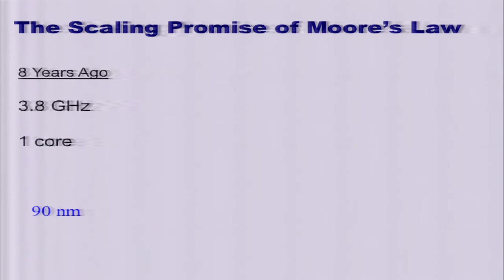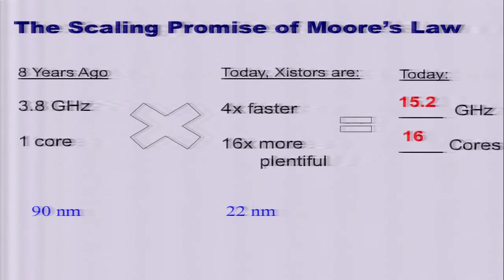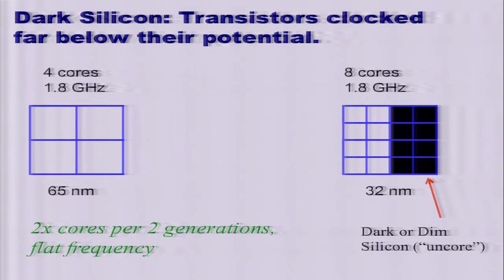You've all seen slides like this, but basically eight years ago we were in a uniprocessor world with processors running around four gigahertz. If you look at transistors today, those transistors are four times faster and 16 times more plentiful, so we would expect through simple math to have really fast processors and lots more cores than we tend to have on a chip. But these numbers are much lower than expected.